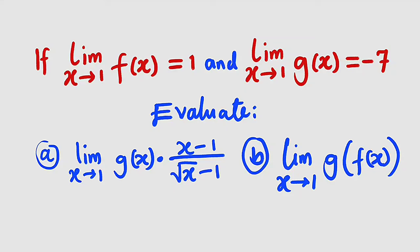Hello, good day viewers. In this tutorial, we are going to find a solution to this limit problem. We are given that the limit of the function f of x as x approaches 1 is equal to 1, and also, the limit as x approaches 1 of the function g of x is equal to negative 7.